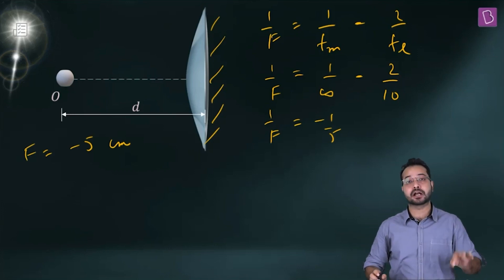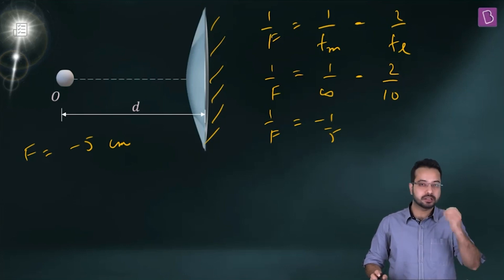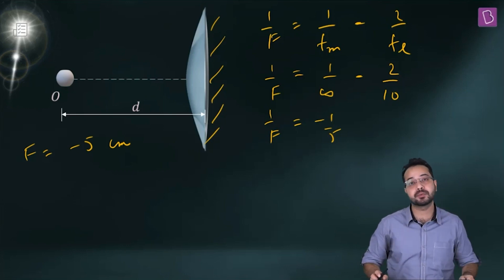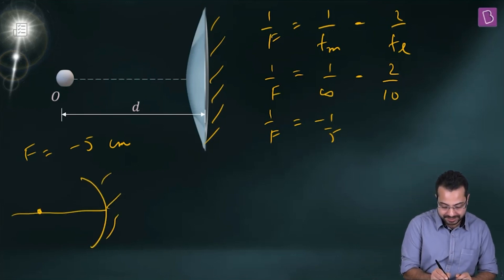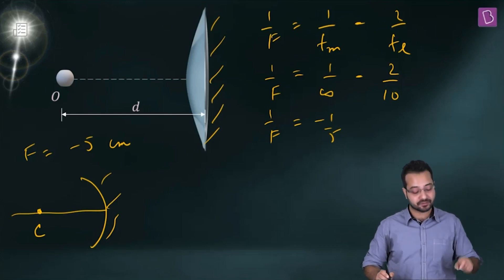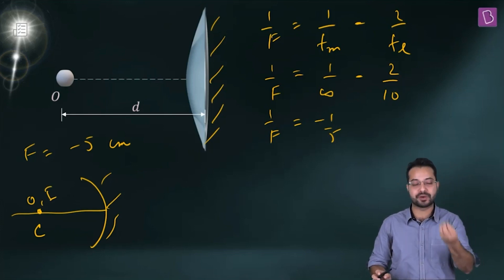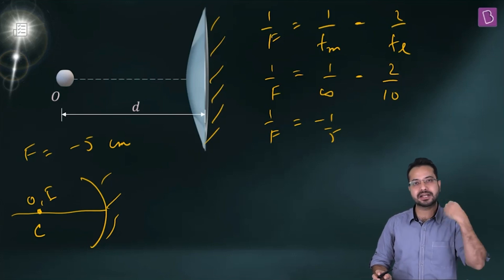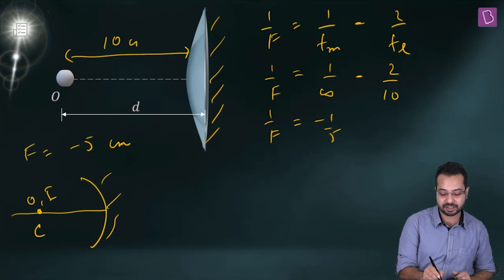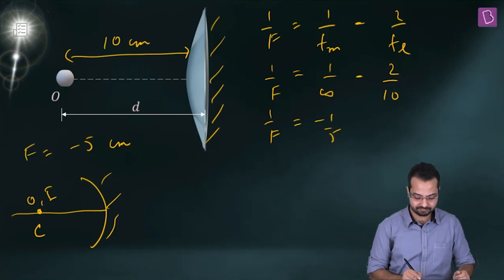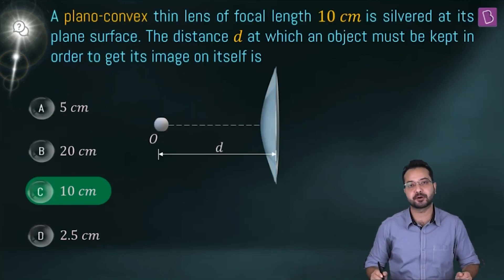For the image to form on the object itself, the object must be placed at the center of curvature of the concave mirror. The center of curvature is twice the focal length: 2 × 5 = 10 cm. So the object must be kept at 10 cm. The correct option is C.